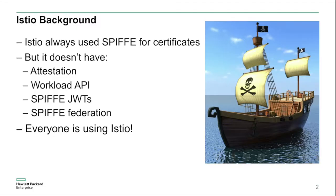In case you didn't know, Istio is a service mesh for Kubernetes. That means it adds a sidecar proxy alongside each service in your Kubernetes cluster, in order to enable advanced networking features like API gateways, load balancing, and mutual TLS encryption between services. For that mutual TLS encryption, Istio has always used SPIFFE certificates. But Istio doesn't have a lot of the advanced features of Spire, like attestation, a workload API, SPIFFE JWTs, and SPIFFE Federation.